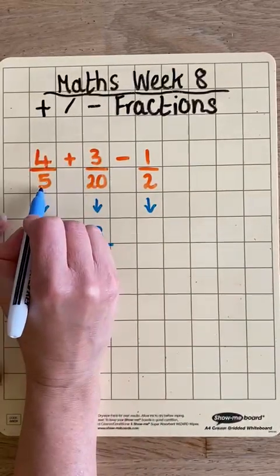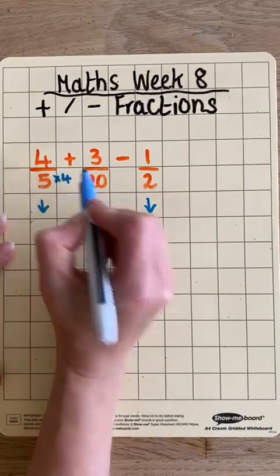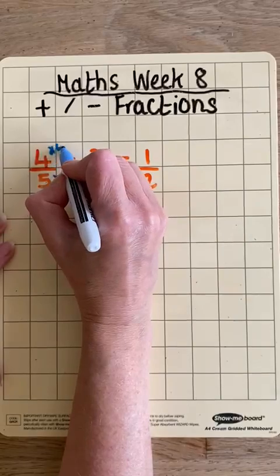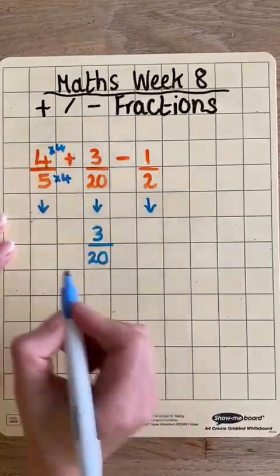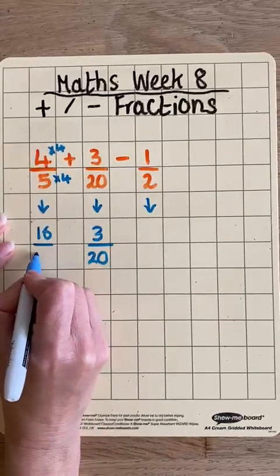This one's four-fifths. I need to change 5 to 20, so I need to times that by 4 to make that into a 20. That means I have to do the same for the numerator. 4 times 4 is 16, and 5 times 4 is 20.